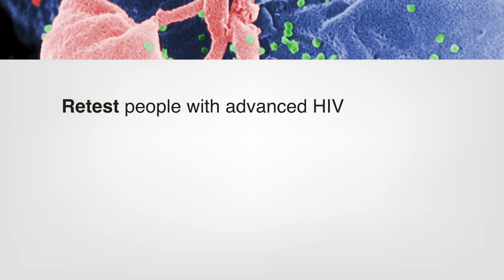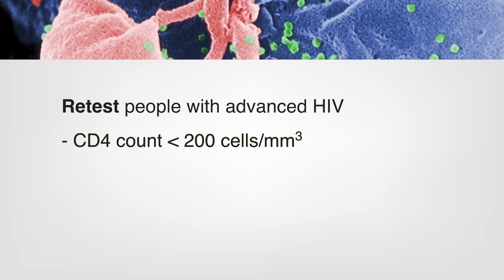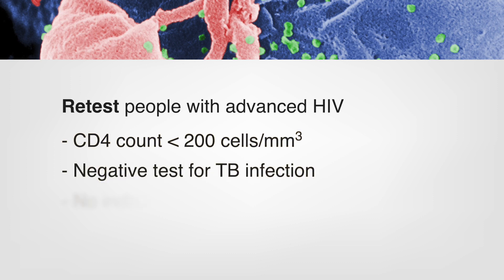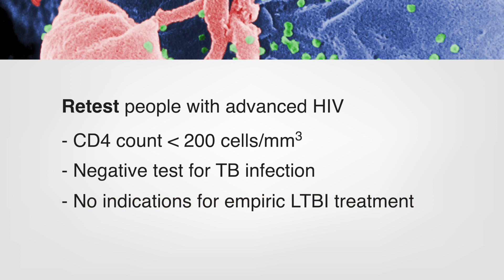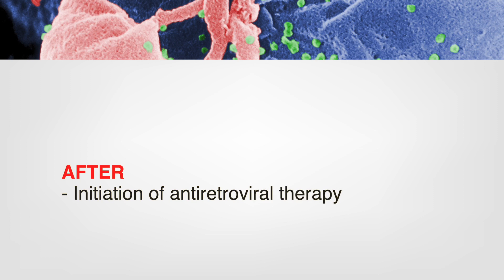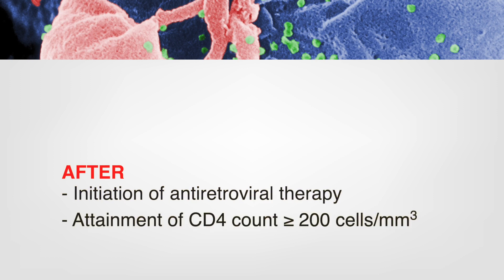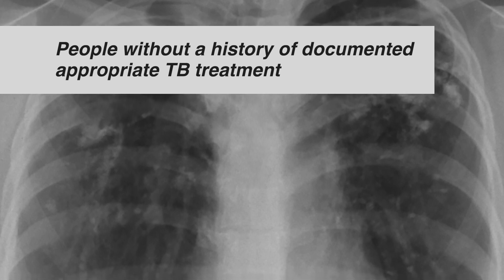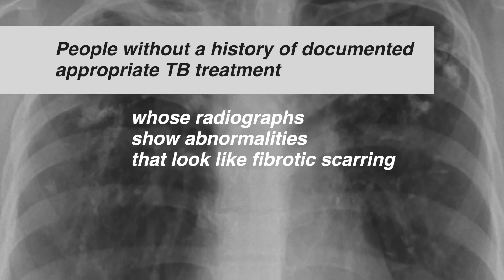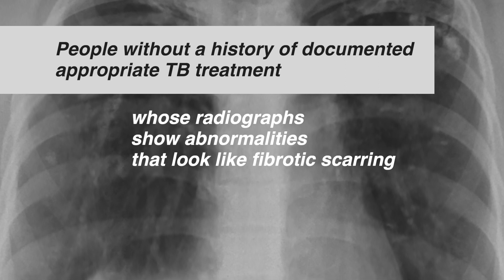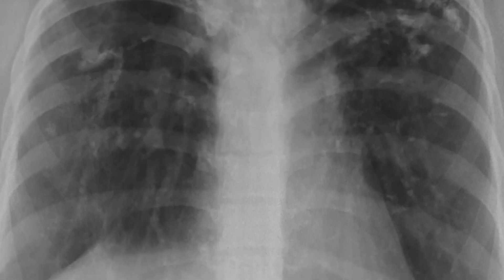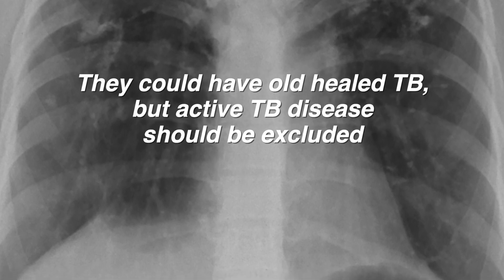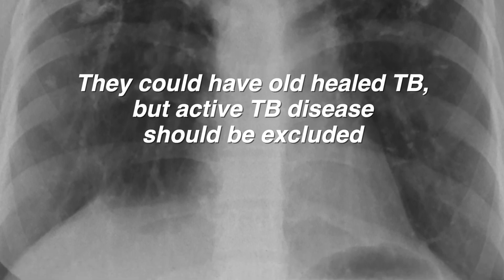Retest people with advanced HIV infection and a CD4 count of less than 200 who have a negative test for TB infection and do not have any indications for empiric LTBI treatment, such as recent exposure to someone with infectious TB disease, after they initiate antiretroviral therapy and attain a CD4 count of 200 or greater. This can help ensure that the initial test was a true negative result. People without a history of documented appropriate TB treatment, whose radiographs show abnormalities that look like fibrotic scarring, also have an increased risk of progression to TB disease. Test these individuals for TB infection — they could have old-healed TB, but active TB disease should be excluded.